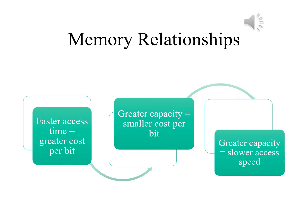As might be expected there is a trade-off among three key characteristics of memory: namely, capacity, access time, and cost. A variety of technologies are used to implement memory systems, and across the spectrum of technologies the following relationships hold: faster access time means greater cost per bit; greater capacity means smaller cost per bit; and greater capacity means slower access speed.